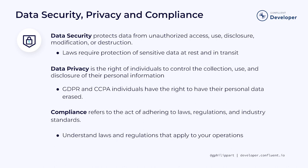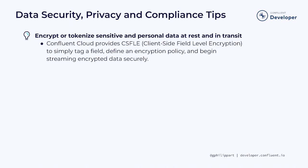Data privacy is the right of individuals to control the collection, use, and disclosure of their personal information. For example, GDPR and CCPA state that individuals have the right to have their personal data erased. Compliance is a critical aspect of data security and privacy, and it involves adhering to laws, regulations, and industry standards that relate to data protection. Organizations must understand the laws and regulations that apply to their operations and take steps to protect sensitive data and maintain compliance to avoid legal liabilities and reputational damage. Now, a few tips on security, privacy, and compliance.